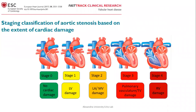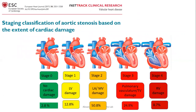We have a new classification for staging aortic valve stenosis based on the extent of cardiac damage into five stages. Stage 0: no associated cardiac damage. Stage 1: associated left ventricular damage. Stage 2: left atrial or mitral valve damage. Stages 3 and 4 are late stages — pulmonary hypertension or tricuspid valve involvement, and RV ejection fraction reduction. More than one-third of patients are included in the late stages 3 and 4 in this new classification.